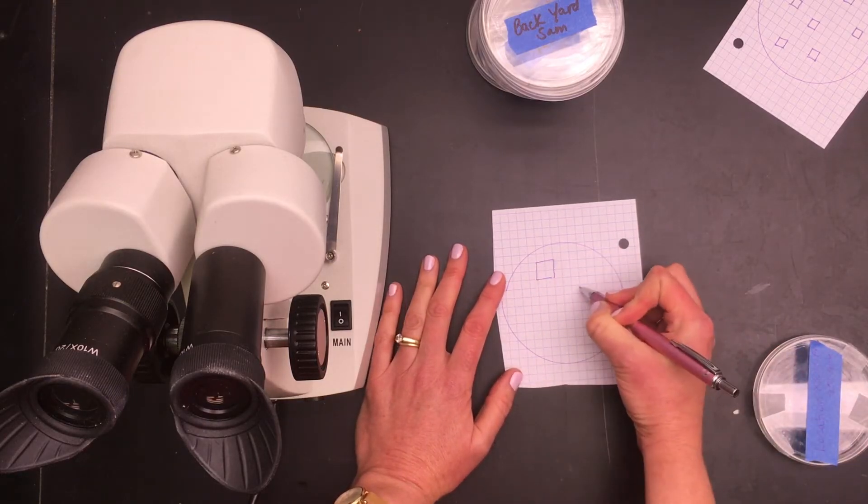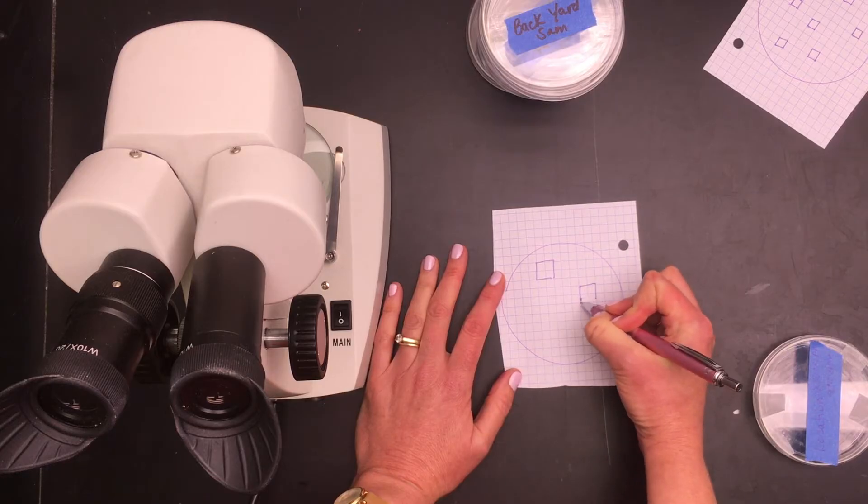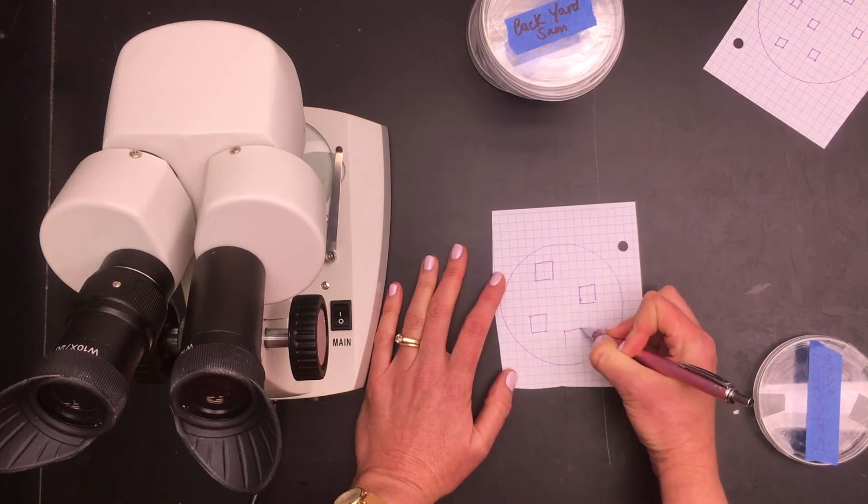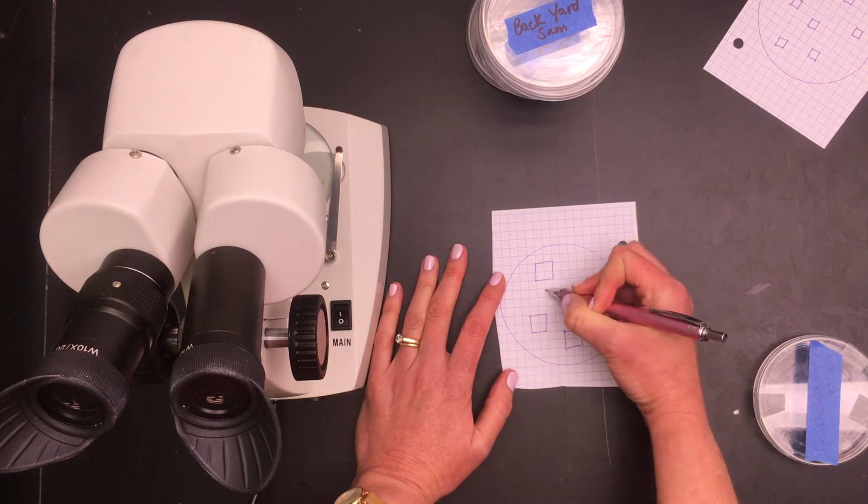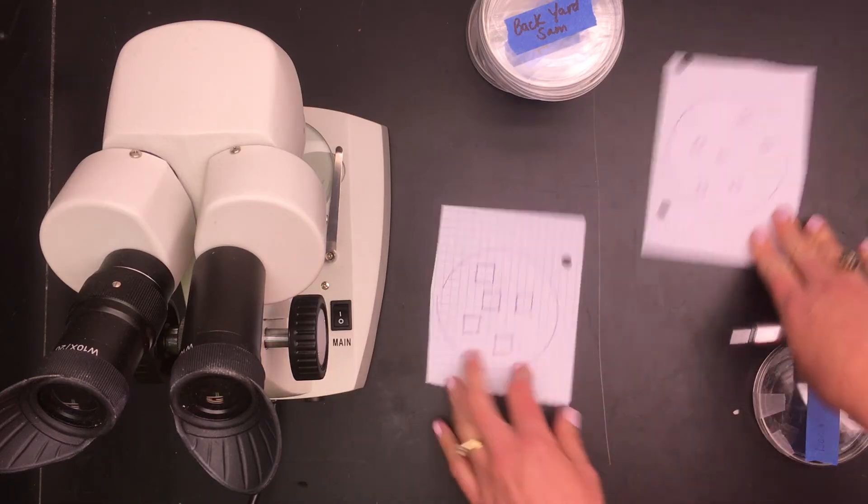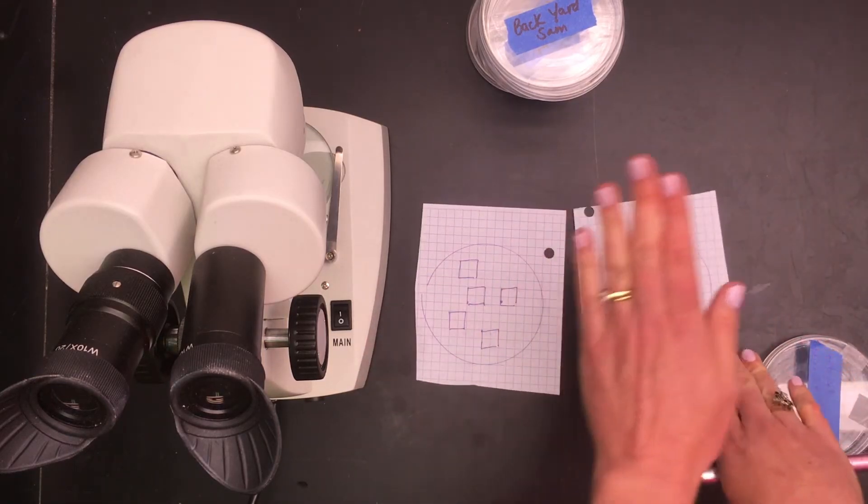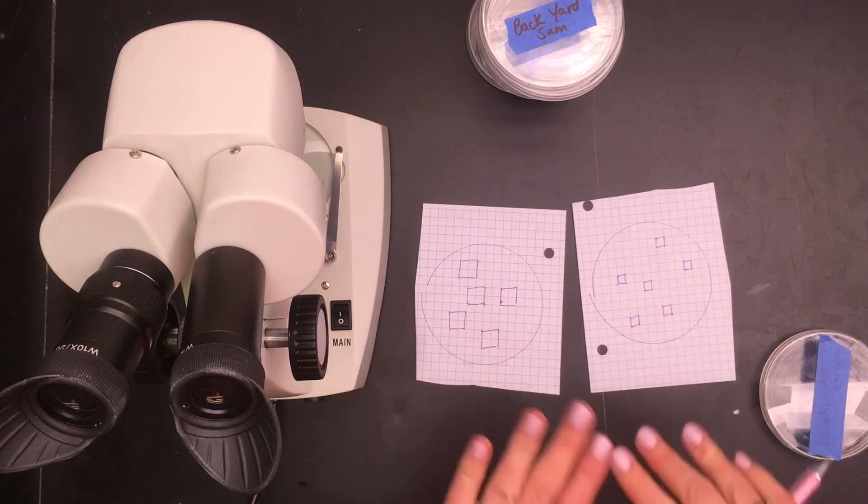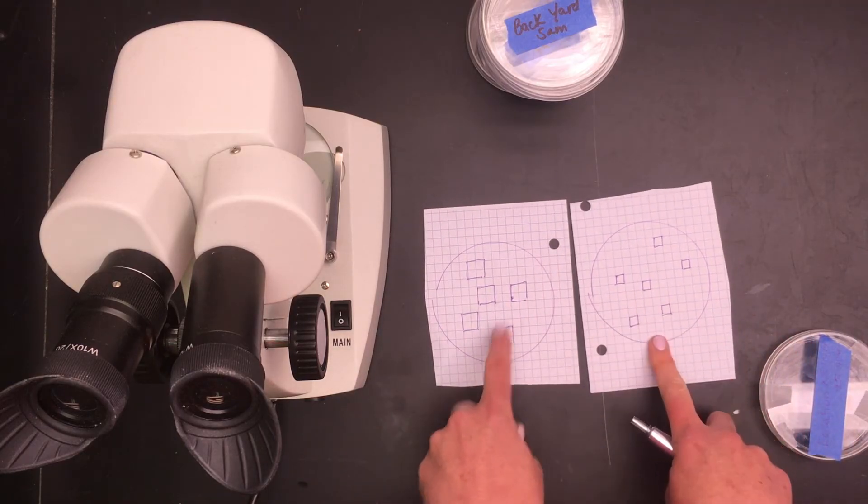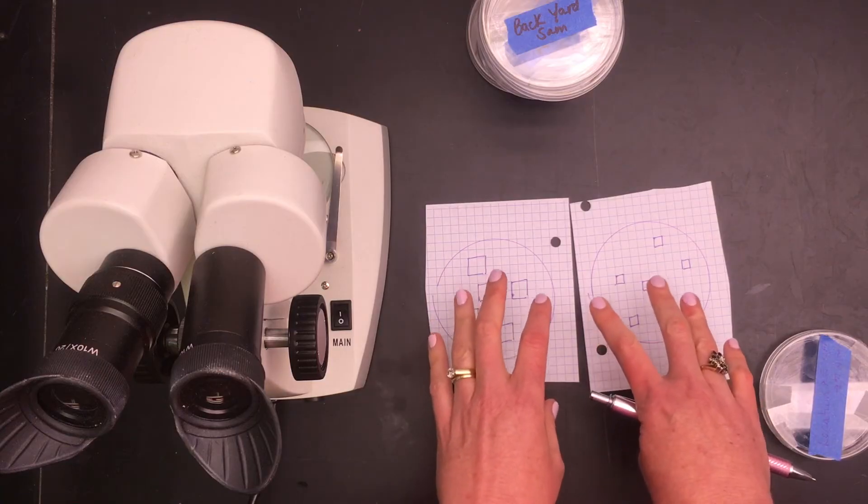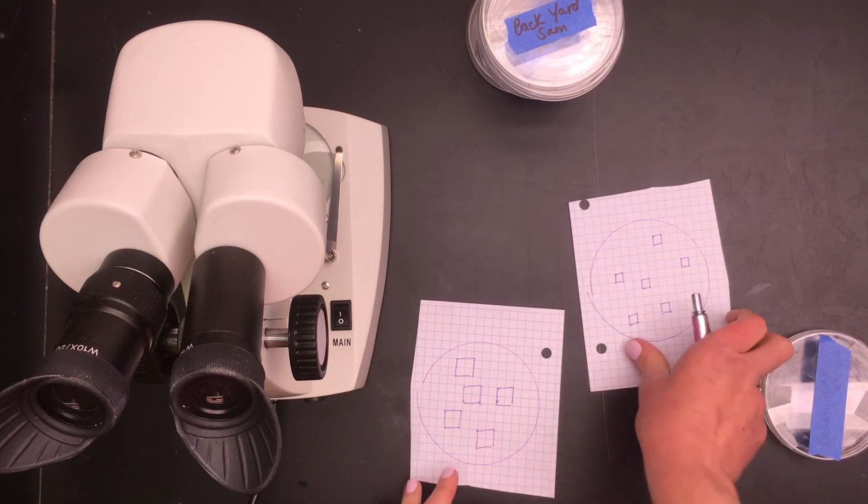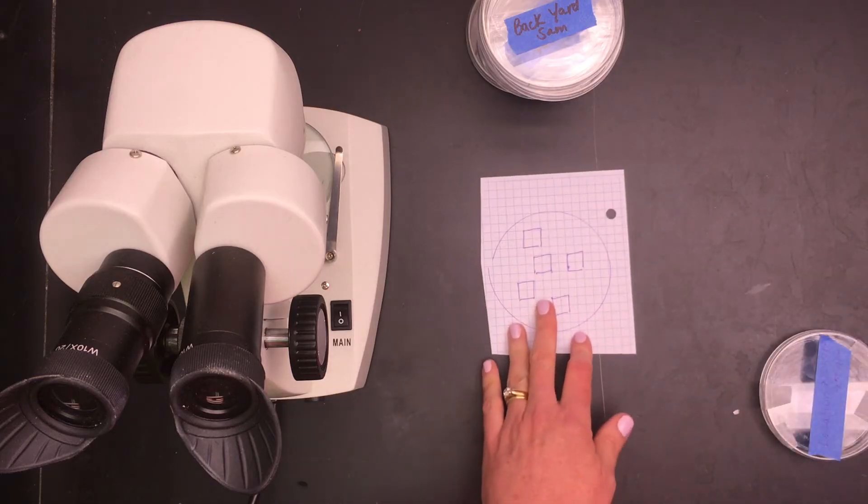But whatever you do, it has to be the same template for all of your dishes. You cannot use this one on one dish and this one on another. That is not a constant. Your constant is that you have to choose and make one template and use it for all your dishes.